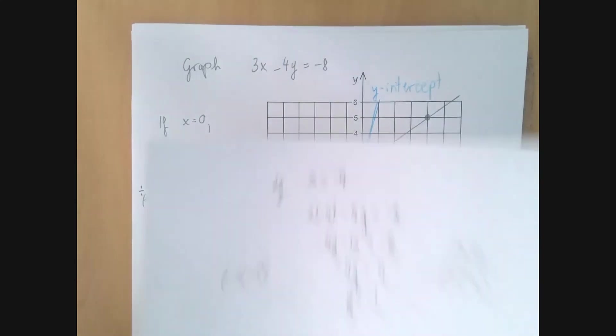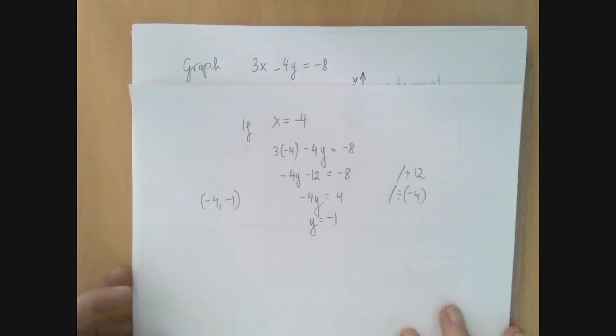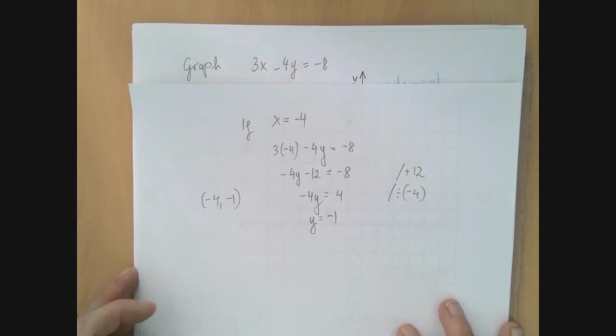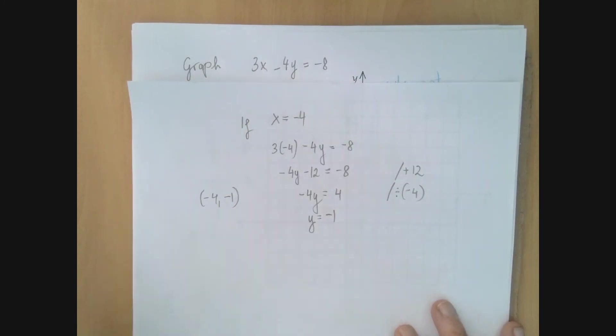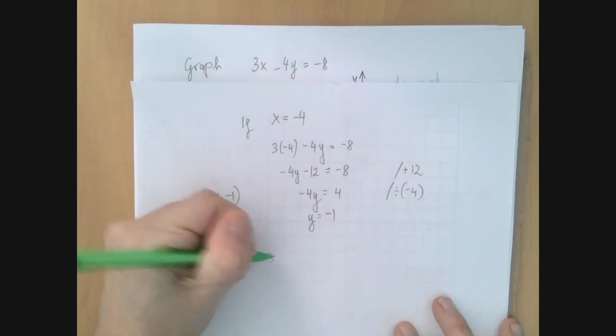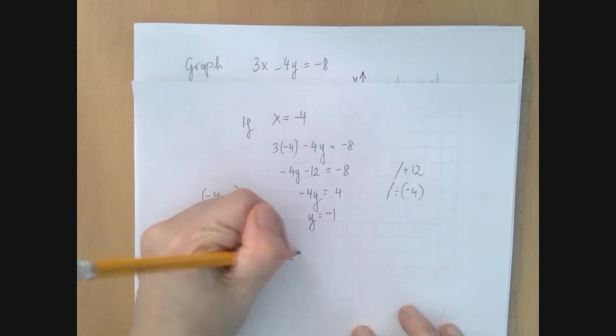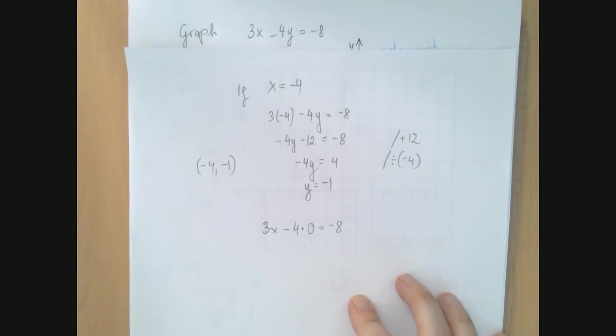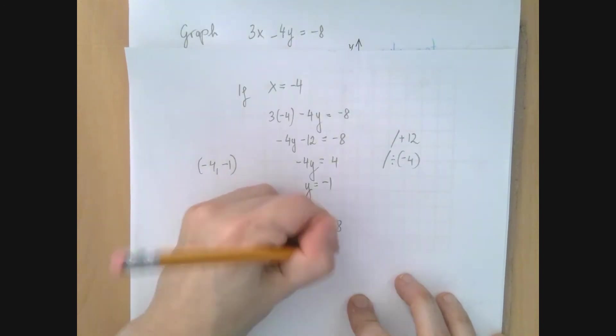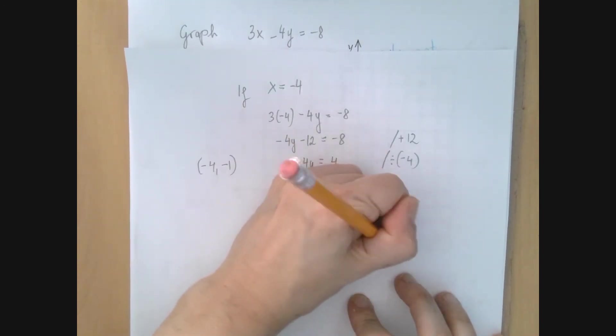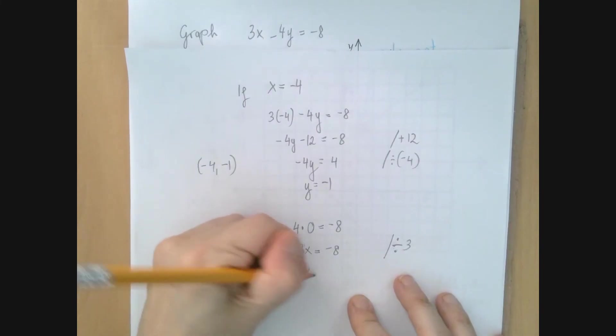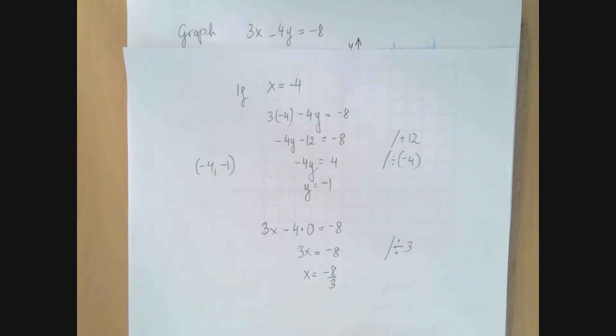So what that would look like is we're going to take the equation 3x minus 4y equals negative 8, and now we would put y equals 0. So it's 3x minus 4 times 0 equals negative 8. That's the same as 3x equals negative 8. And when we divide by 3, then x is negative 8 over 3.